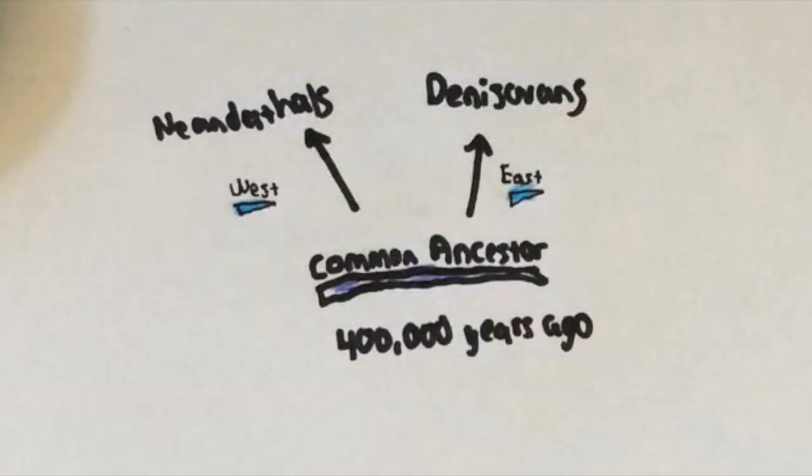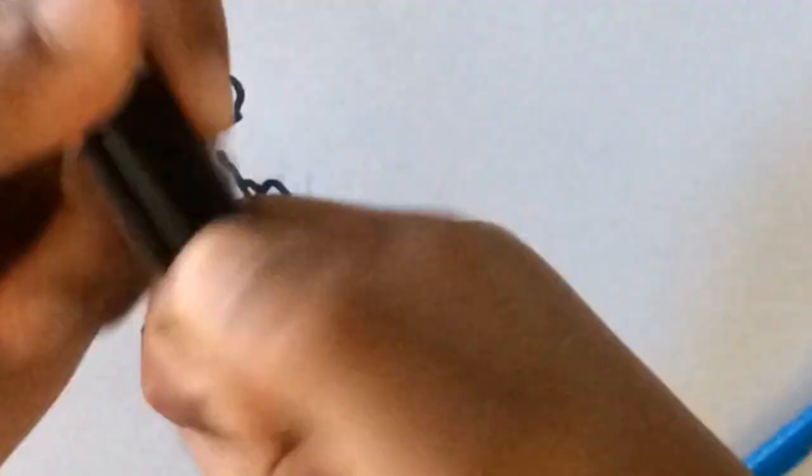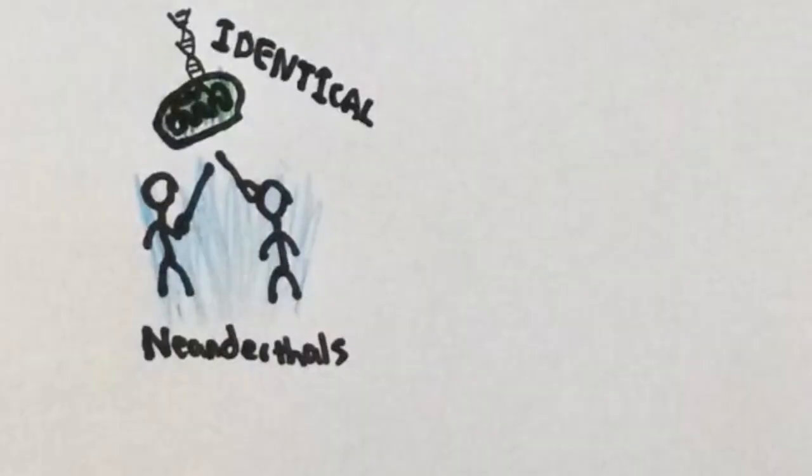The many Neanderthal fossils found in the east with Denisovan DNA showed the early split of the species. Later in history, Neanderthals all had nearly identical mitochondrial DNA, all from an ancestor that lived in Europe 270,000 years ago.